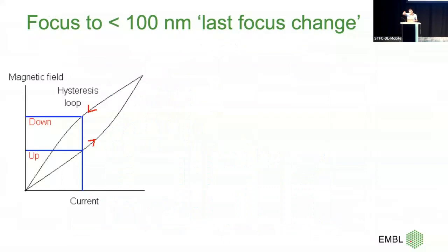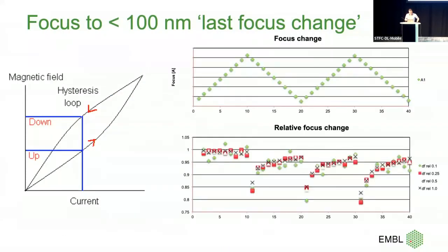I analyzed drift data from tilt series — tilt angle on X, drift in nanometer per second on Y — and for K2 I had to be careful. Focusing has a problem: when you adjust focus there's lens hysteresis, so depending on whether you increase or decrease the current you get a different magnetic field and a different focus value. I tested this by stepping up and down in focus at 0.1, 0.25, 0.5, and 1 micron steps. When you reverse direction it takes a while — you end up with about 80% of the step on the first correction.